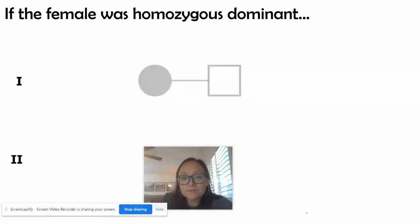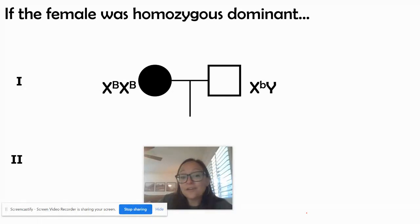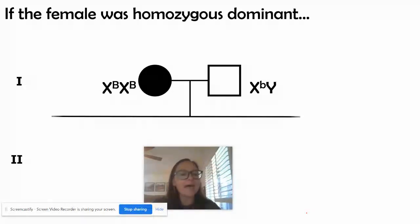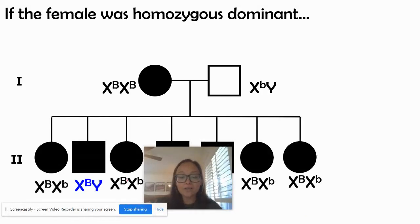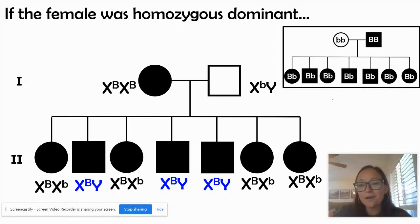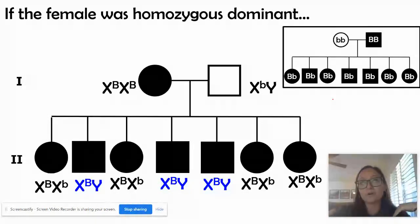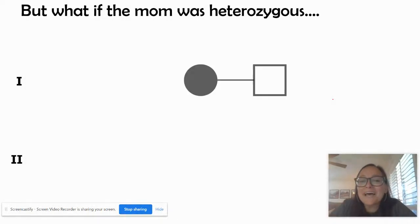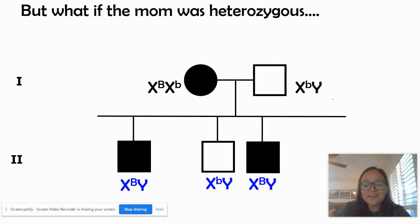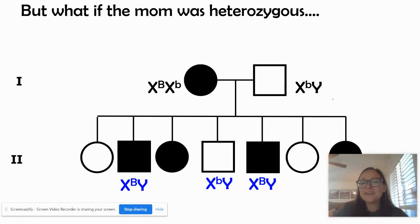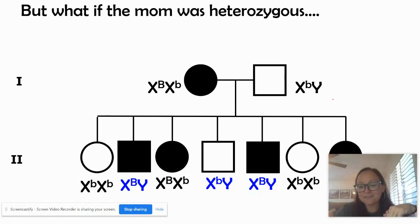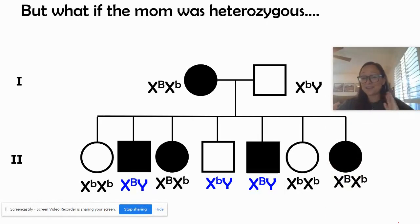Now, if the female was homozygous dominant on her X's, then every single offspring — male and female — would all inherit that dominant X allele. That makes it very hard to determine if it's sex-linked or autosomal, so you'd need more information to say with certainty. And if the mom were heterozygous, you'd expect about half her children to inherit the X with the dominant allele and half without. Something where children are half and half makes it tough — you'd have to look for other crosses and clues.